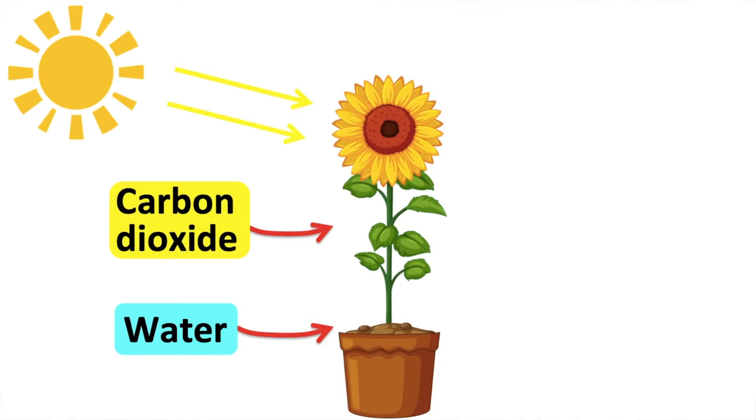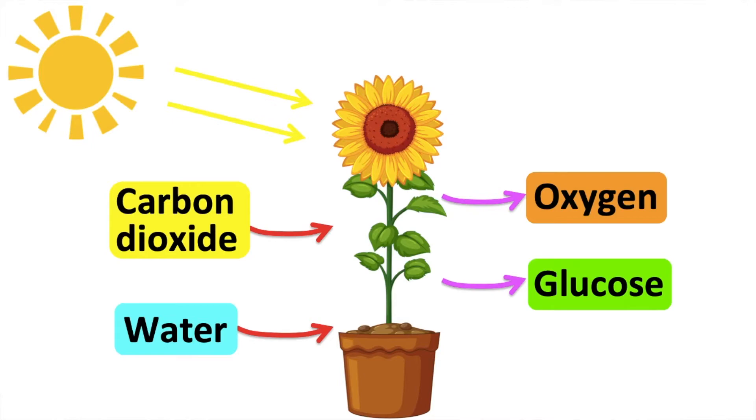Sunlight provides the energy for the process to take place. The chlorophyll in plants can absorb the light energy. The products are oxygen and glucose. Oxygen is released back into the air through the stomata of the leaf. Glucose is a source of energy for the plant. Glucose is transported around the plant by the phloem vessels.